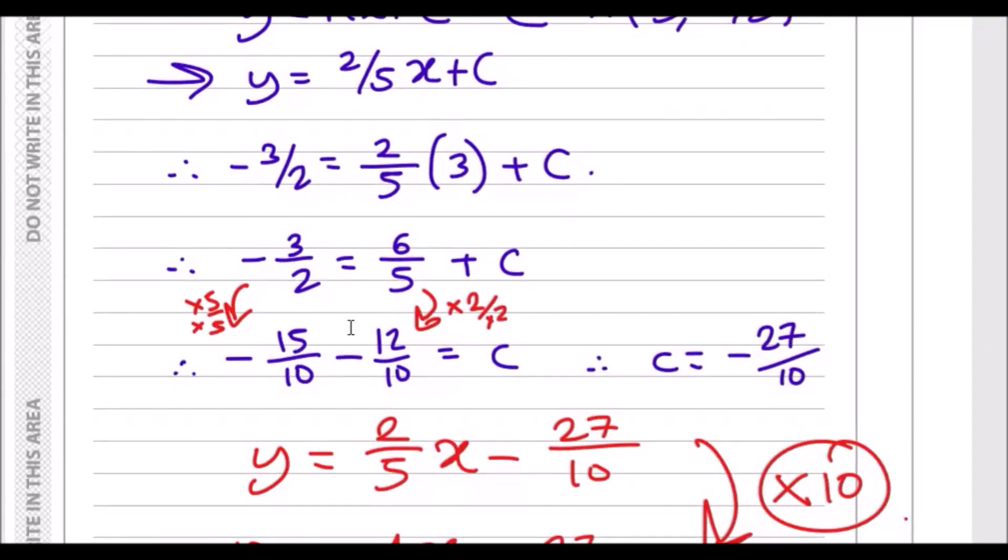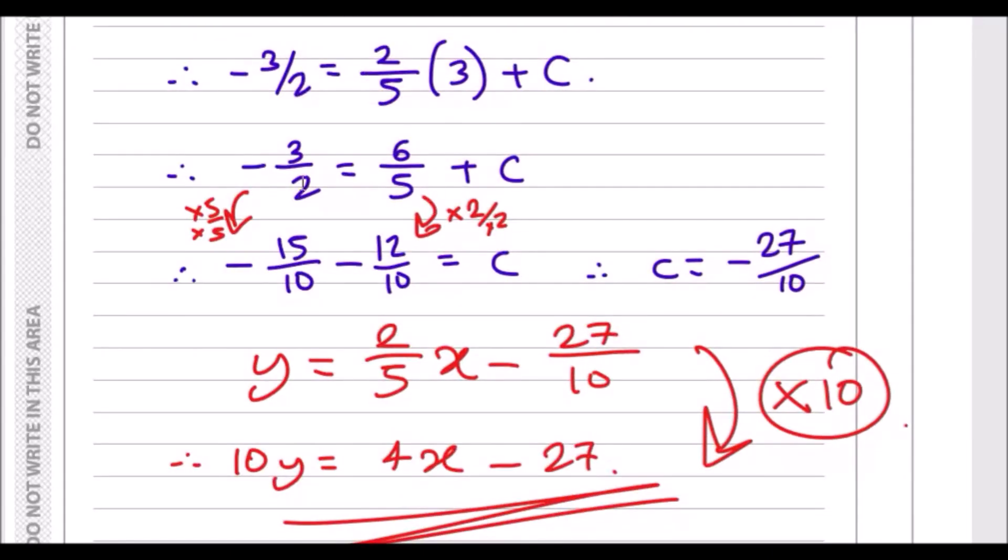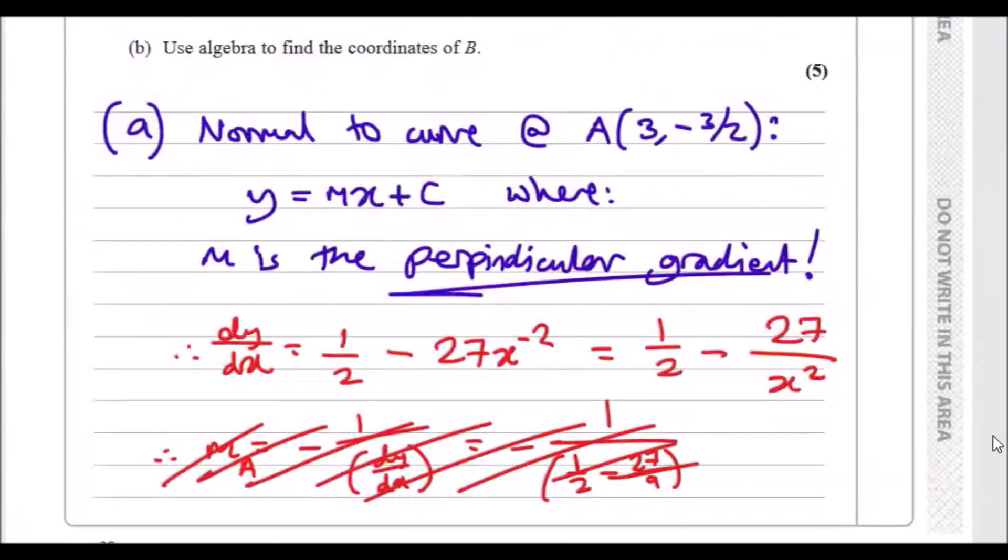We just plug this value in, so replace x with 3, y with minus 3 over 2. This part takes a while, you just have to solve this step by step. Times this out, so it'll be 6 over 5, and then make these both over 10. So times up and down by 5 and up and down by 2 to get these results. Make c the subject and you should get minus 27 over 10. So this is the y-intercept.